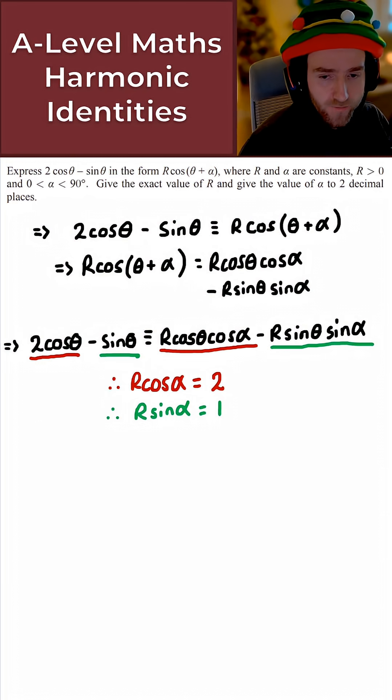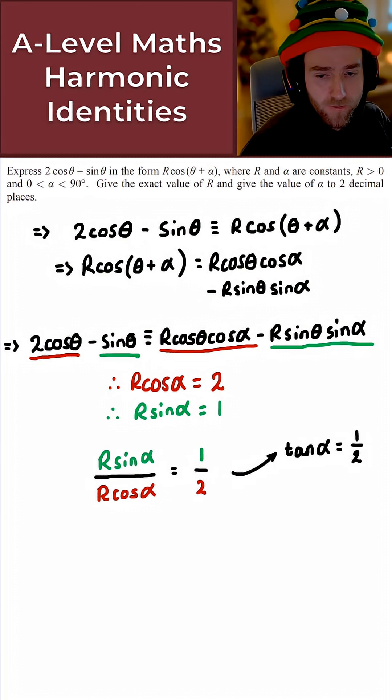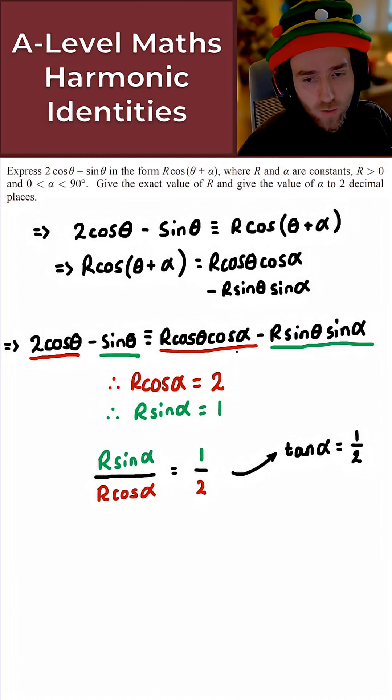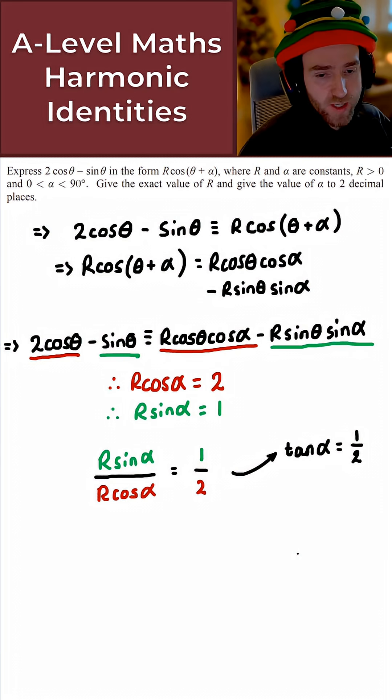So what we can now do here then is use some basic trigonometric identities. If we do that, we obtain the following. We have R sine alpha over R cos alpha is equal to 1 over 2. Just using these here, right? And R sine alpha over R cos alpha is just the same then as tan alpha. Just a basic trigonometric identity. So tan alpha here is equal to 1 over 2.